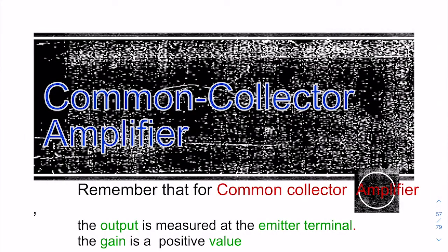Assalamualaikum Warahmatullahi Wabarakatuh. Now we'll go to the last part of chapter 5. Previously you learned about common emitter, where V out is at the collector and your gain is minus and more than one. Now we move to the common collector.